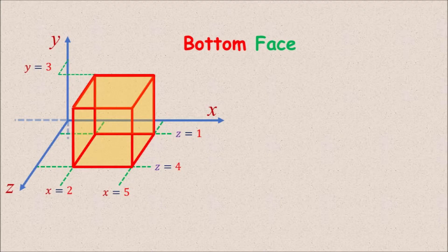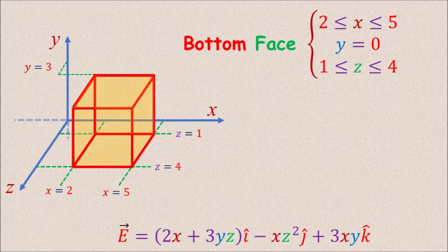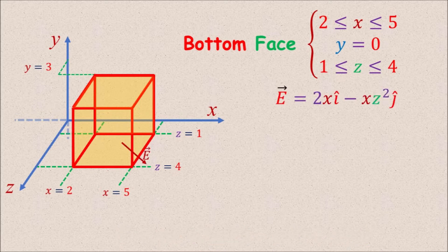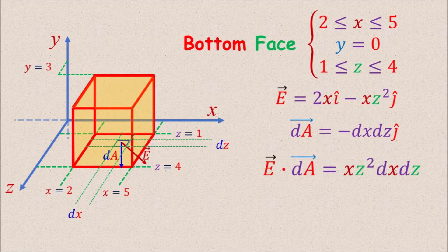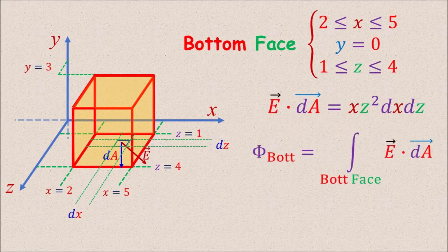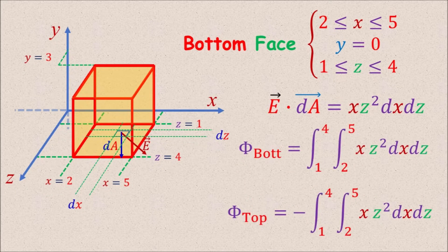For the bottom face, x is between 2 and 5, y equal to 0, and z between 1 and 4. Substituting y equal to 0 into the E field formula gives E equal to 2x i-hat minus xz² j-hat. The dA vector has magnitude dx dz but points in the negative y direction, negative j-hat. Therefore E dot dA is positive xz² dx dz. The flux through the bottom face is the double integral of xz² dx dz over the same region — exactly the same as the top face flux except for the sign. Therefore these two add up to zero.